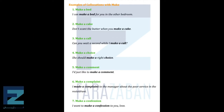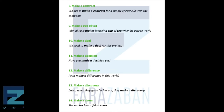Examples of collocations with make: Make a bed — I can make a bed for you in the other bedroom. Make a cake — Don't skip the butter when you make a cake. Make a call — Can you wait a second while I make a call? Make a choice — She should make the right choice. Make a comment — I just like to make a comment. Make a complaint — I made a complaint to the manager about the poor service in the restaurant. Make a confession — I want to make a confession to you, love. Make a contract — We are to make a contract for a supply of raw silk with the company.